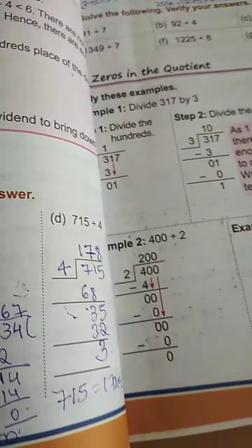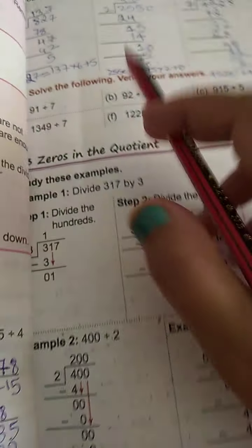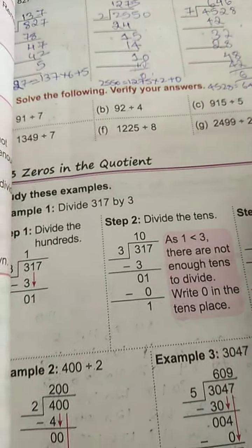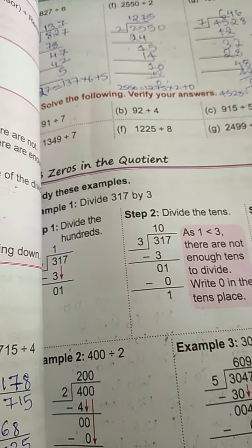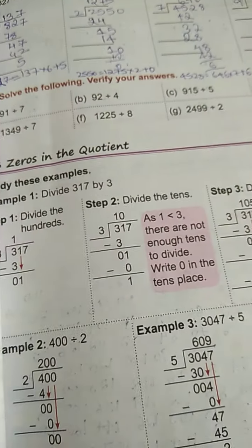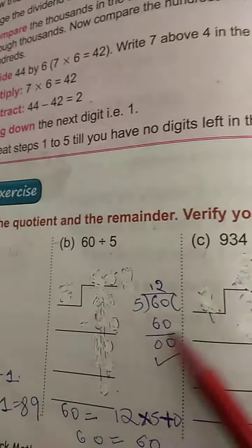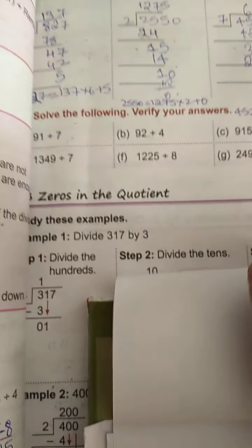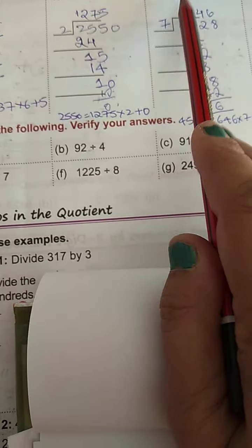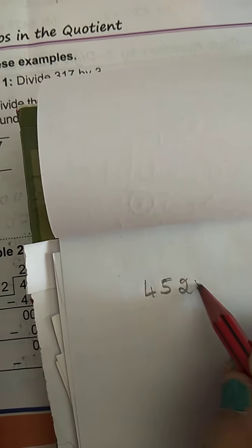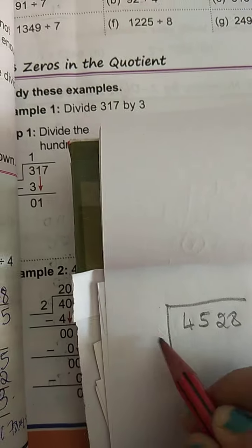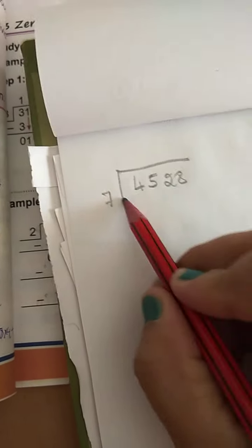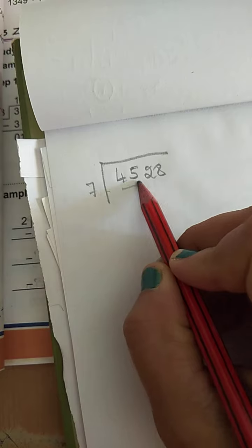So if you know the tables, then these sums are very easy. So for example, 4 digits. This is 2 digits. So let us take this one. 4,528. You have to divide it by 7. So 7 compared to 4, 4 is smaller. So you have to take 2 digits.